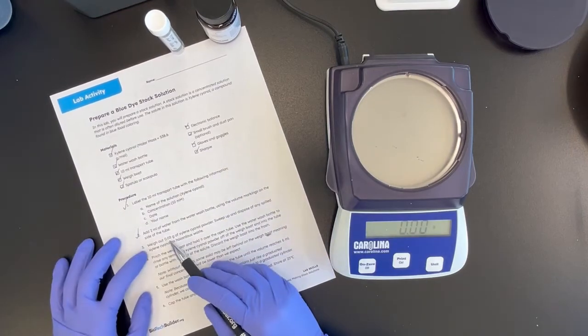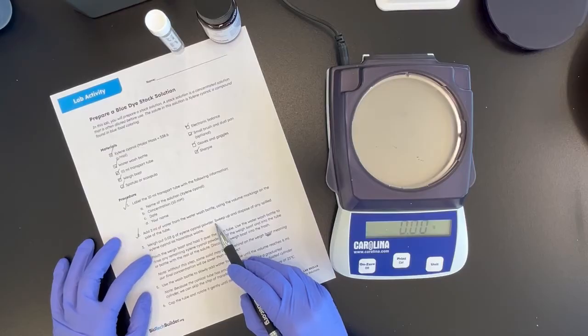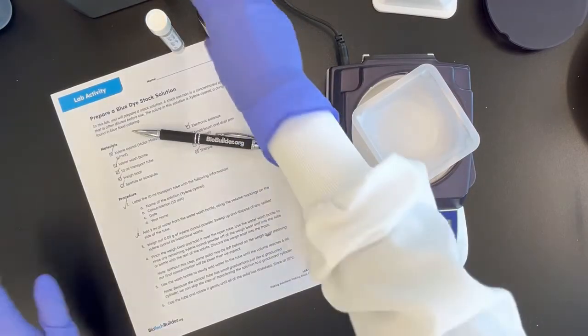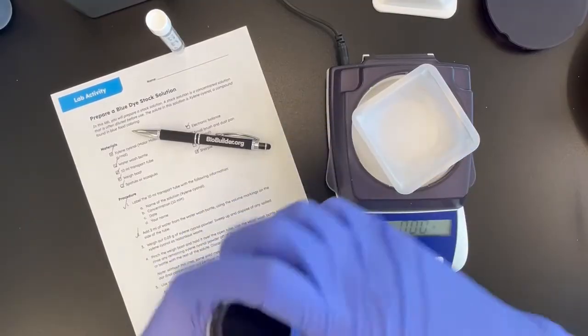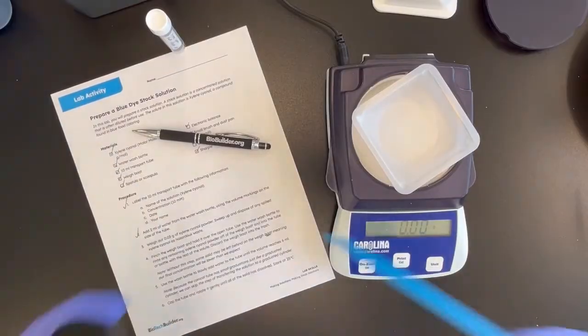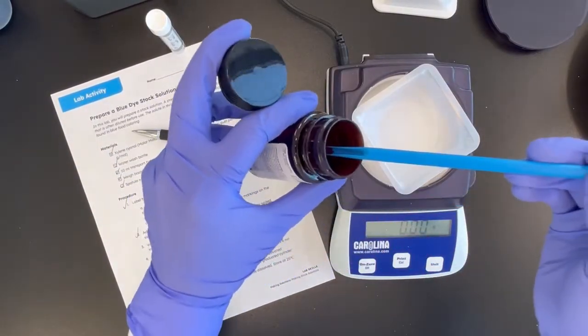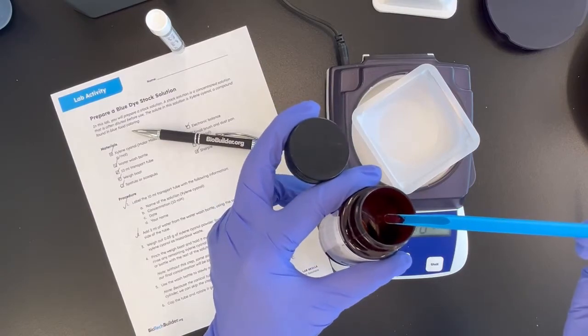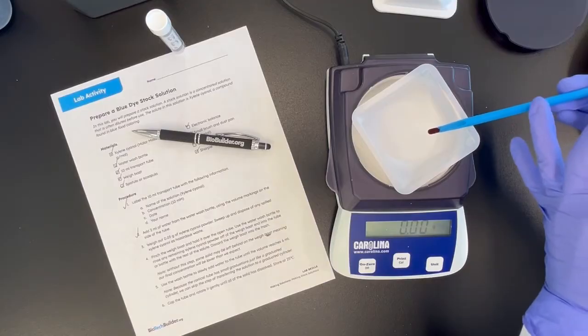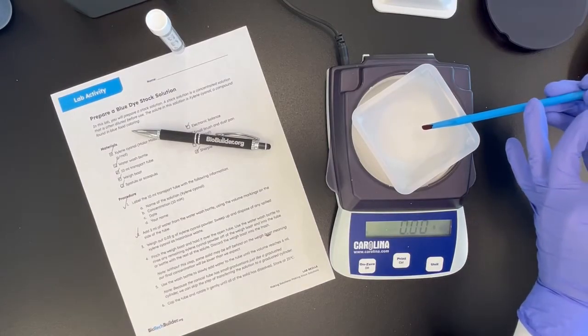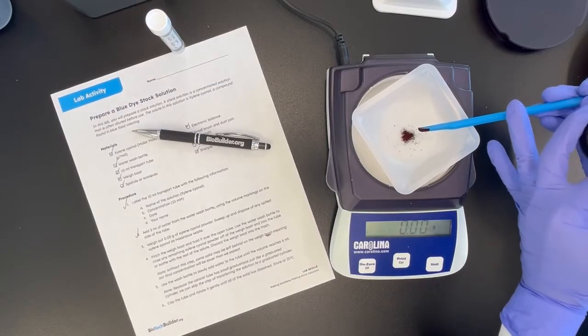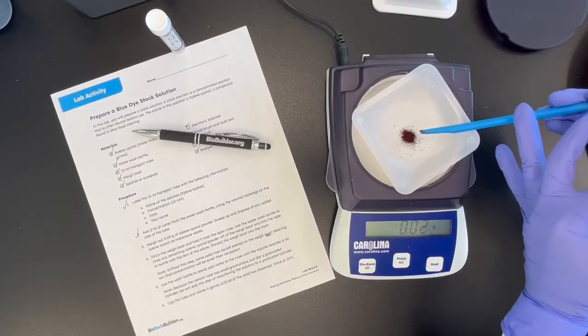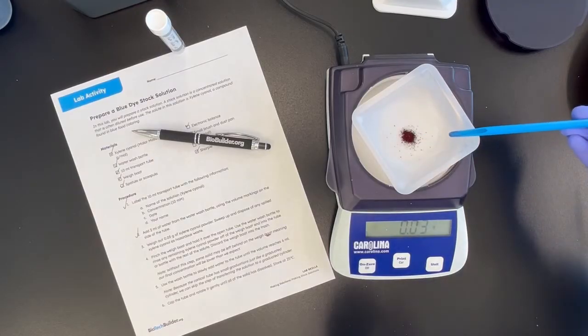So the next step is to weigh out 0.03 grams of xylene cyanol powder. So we'll take a weigh boat, set this to zero. And this is xylene cyanol. And this is a spatula or scoopula. 0.03 grams is quite a small amount. And so what you want to have the students do is to take a little bit of the powder on the spatula and gently tap the handle of the scoopula to drop the reagent off a little bit at a time. It's almost at 0.03. Okay, great.